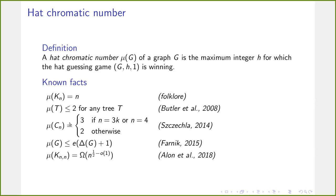The hat chromatic number of a cycle on N vertices is 3 if the cycle length is a multiple of 3 or the length is exactly 4; otherwise it is 2. This was proved by Czeisla in 2014. There is a universal upper bound by Farnik bounding the hat chromatic number in terms of the maximum degree: at most e times the maximum degree plus one. And Alon and others showed that the complete bipartite graph with two parts of size N has hat chromatic number asymptotically at least N^{1/2 − o(1)}.